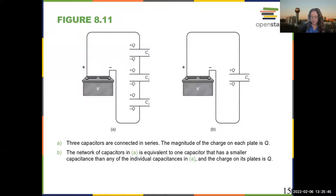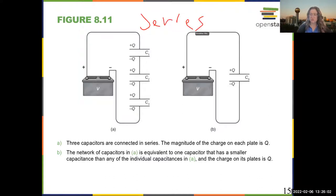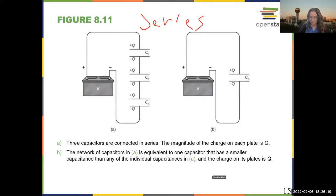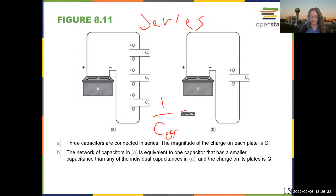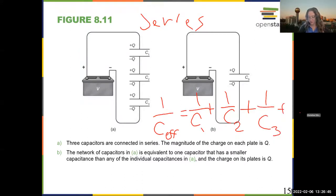There are two different ways that you can set up capacitors — two simple ways: in parallel or in series. In series means one after another. This particular figure shows capacitors in series. When you have capacitors in series, the charge on every single capacitor is the same, but one over the effective capacitance is equal to the sum of the inverses of the individual capacitances — and if you had more, it would go on and on.